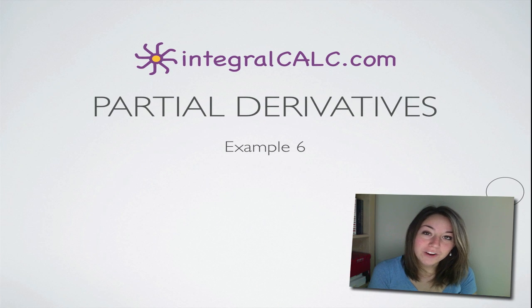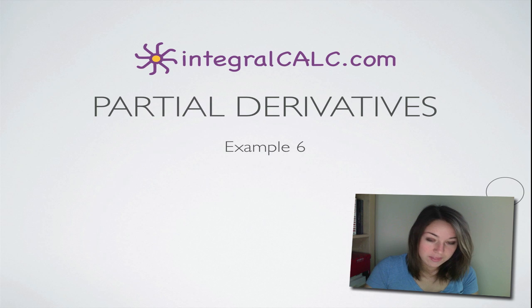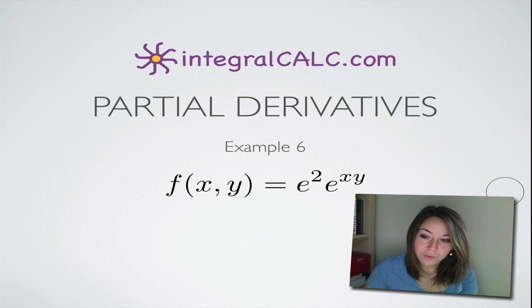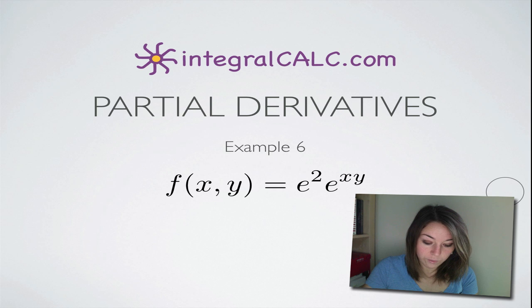We're going to be doing another partial derivatives problem today. This one is f of xy equals e squared times e to the xy.